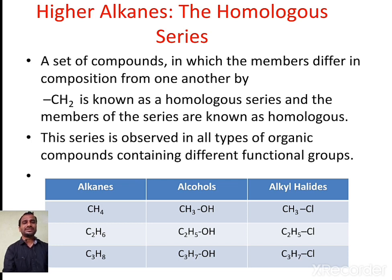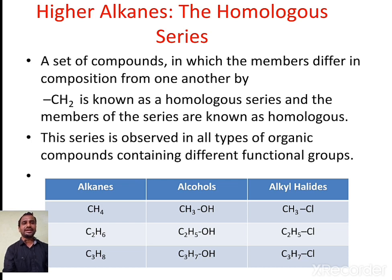This homologous series can be present in each and every class of organic compounds. For example, if we consider a table with three different organic compound families: alkanes, alcohols, and alkyl halides. In the alkane family, the examples are methane, ethane, and propane. Methane and ethane are distinguished by a CH2 unit, and ethane and propane are also distinguished by a CH2 unit. So methane, ethane, and propane are called homologs of the alkane homologous series.